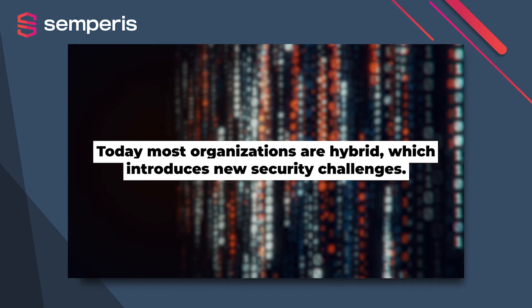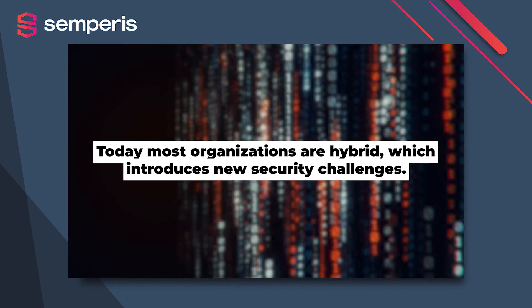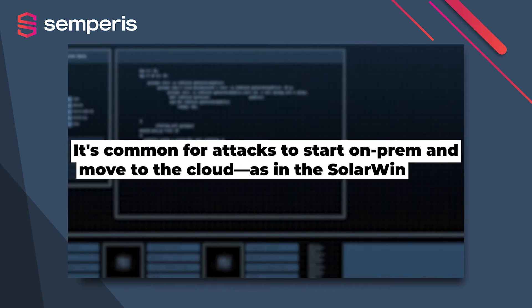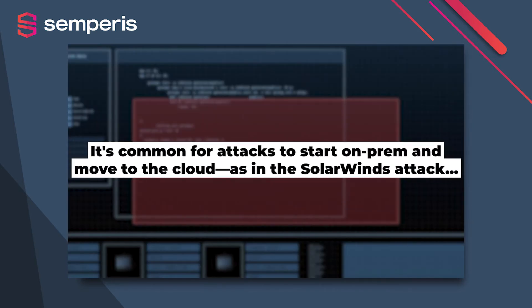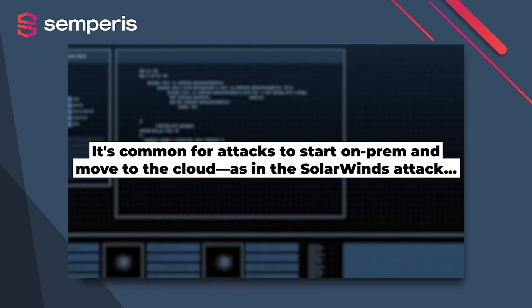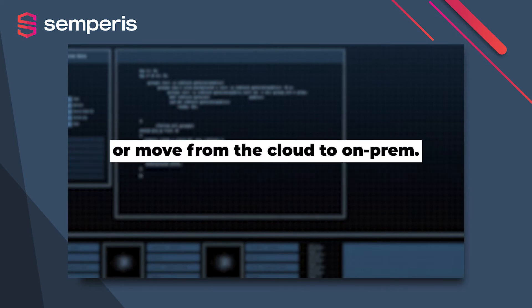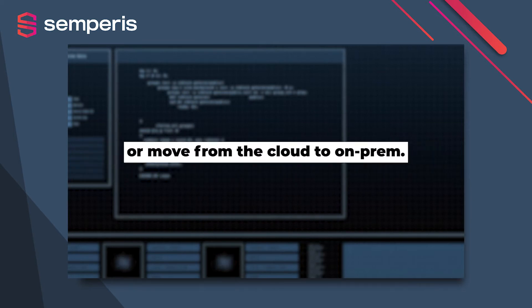Many of the indicators that we look for to validate compromise, or indicators of exposure in your on-prem Active Directory, revolve around Kerberos weaknesses: Kerberos constrained delegation, SPN service principal names being Kerberoasted, etc. Kerberos doesn't play any role in Azure AD.